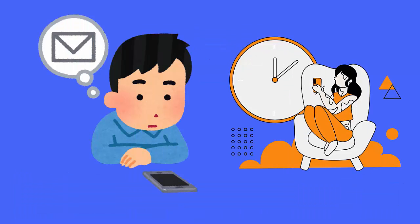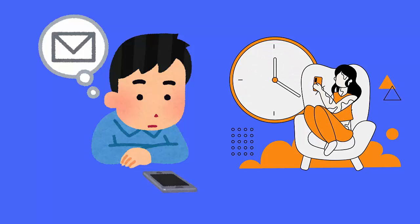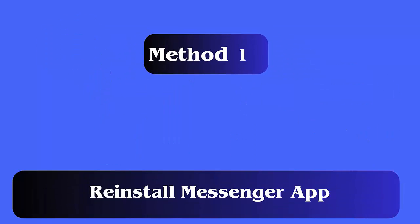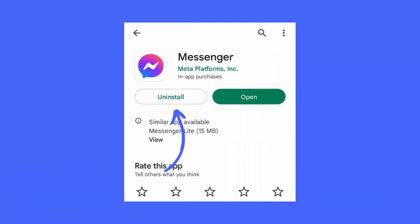Method 10: Wait for some time. One of the best tricks to get out of the error is by waiting for some time and trying again later. Whenever you see the 'Messenger unable to complete request' error, don't worry — just tap on OK and wait.